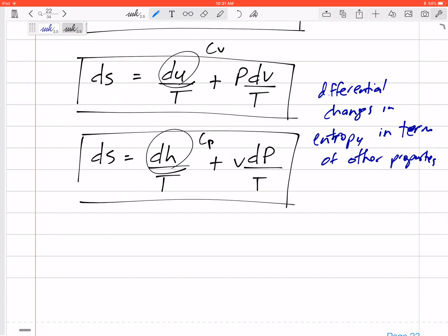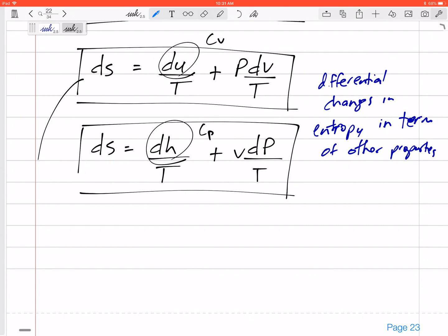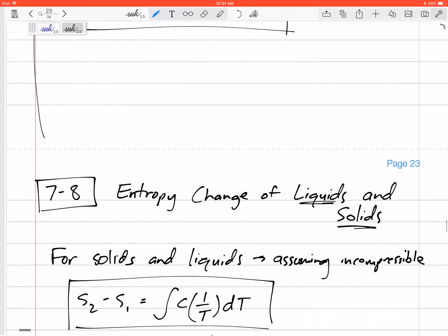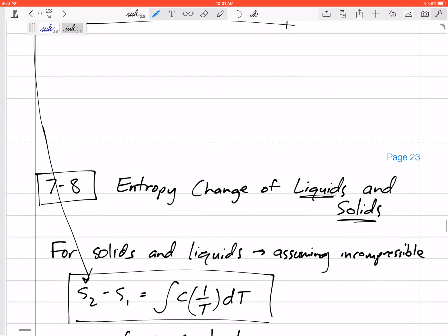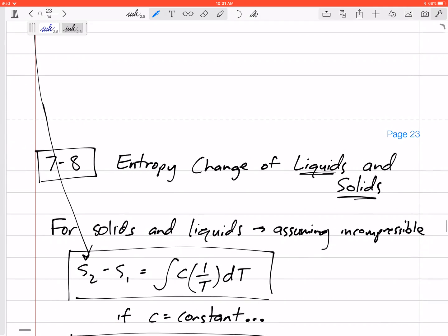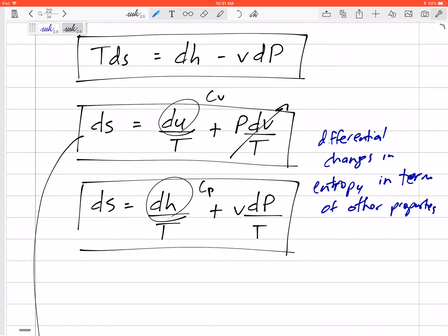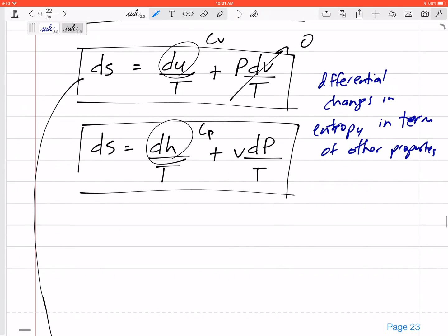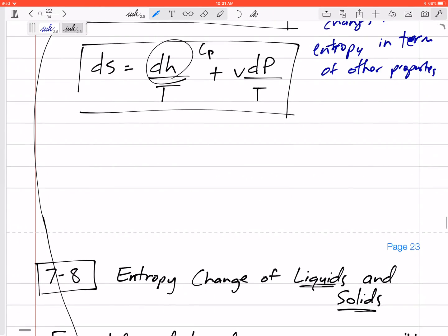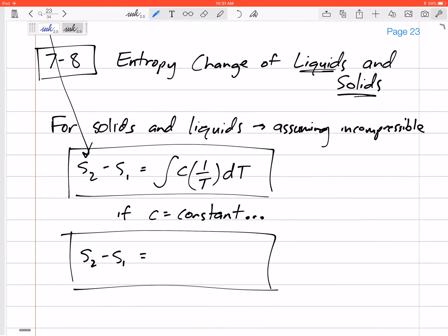So we're going to take that and go to seven dash eight and talk about the entropy changes of solids and liquids. So we can take this equation right here, this DS equation, and I'm not going to do the derivation. I think you can see it. For solids and liquids, we're going to assume that it is incompressible.